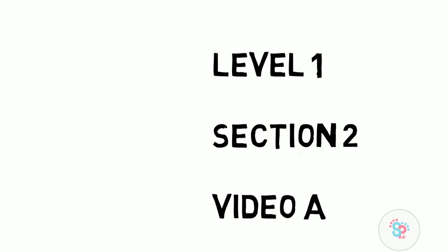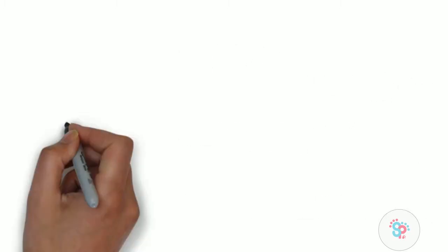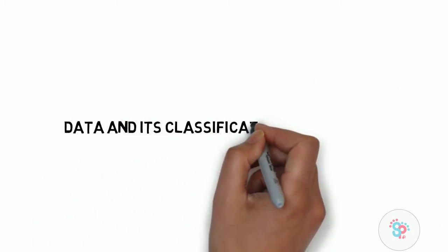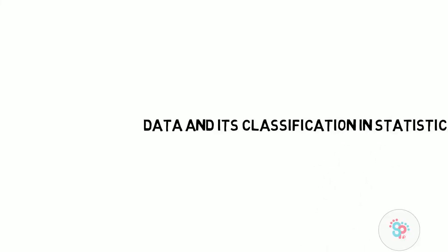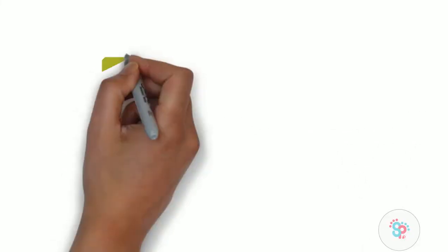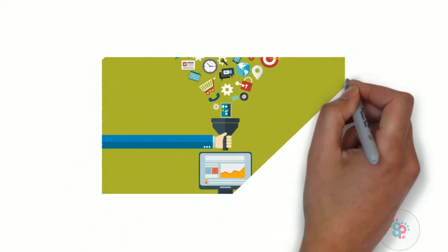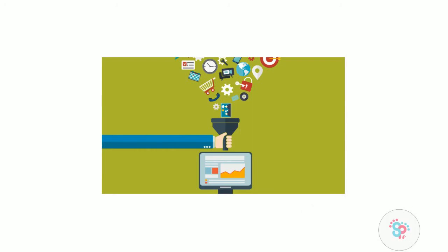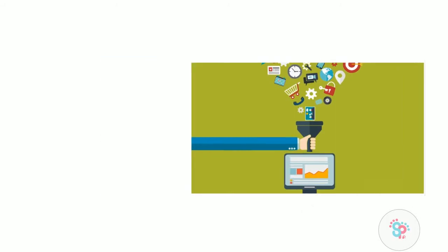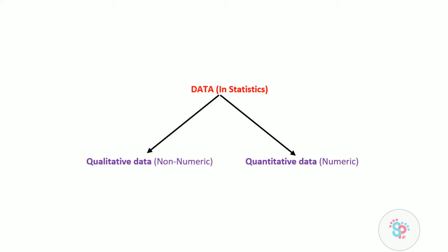Today our focus is on data and its classification in statistics. Data is a collection of information, and in statistics data can be broadly classified into qualitative data and quantitative data. Qualitative data is non-numeric data and quantitative data is numeric data.